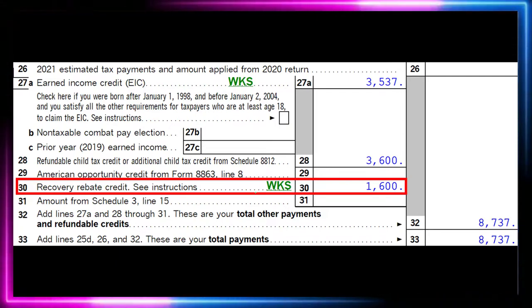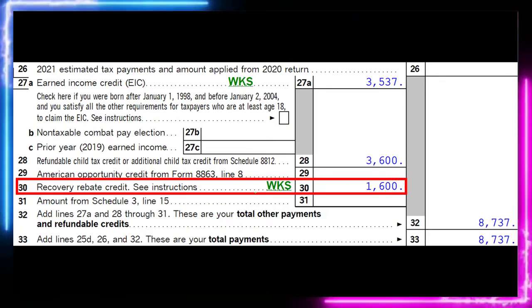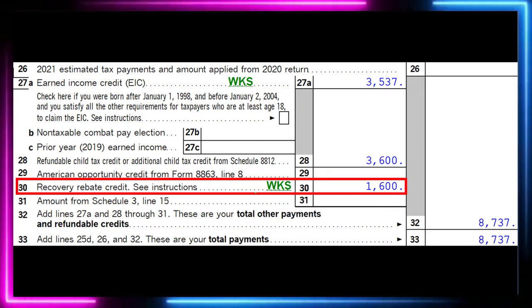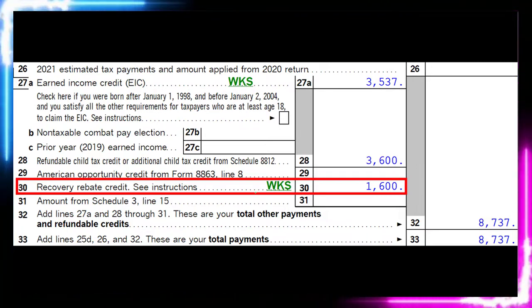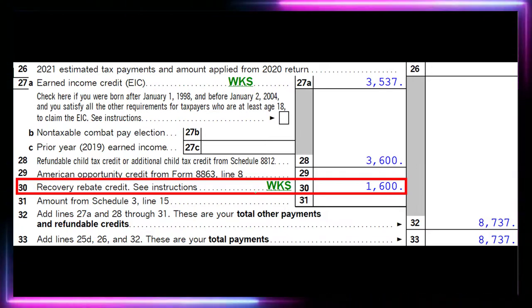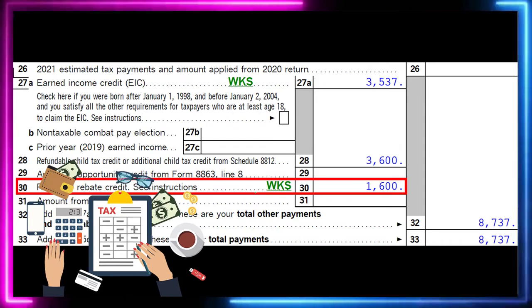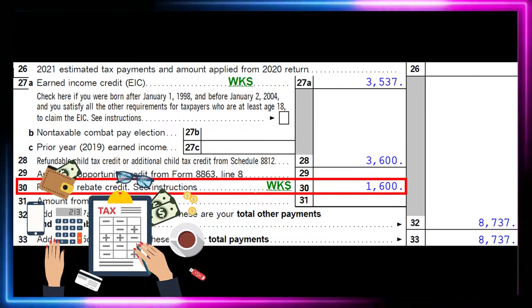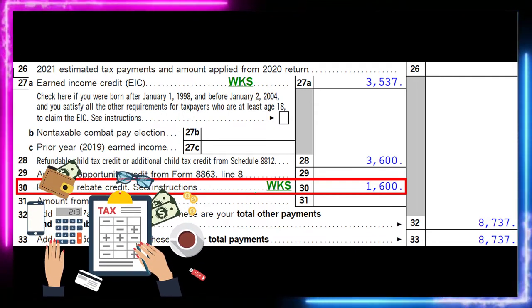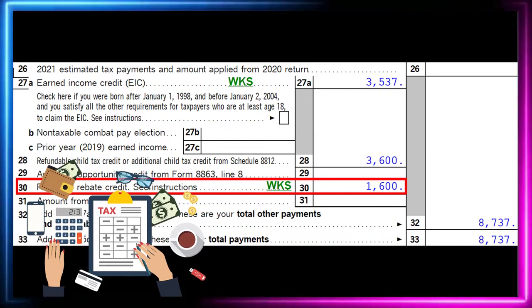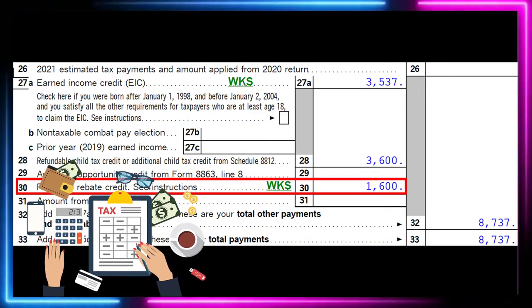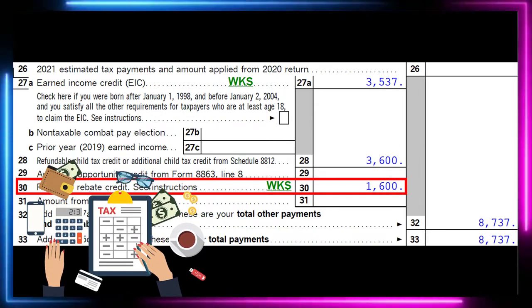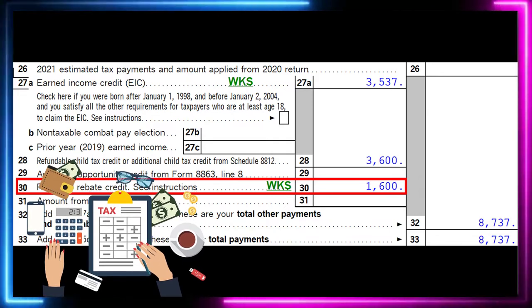The recovery rebate credit is tied to the stimulus payments or the economic impact payments. There are three stimulus payments up to this point. The first two stimulus payments are actually applied to the prior tax return. The third stimulus payment is the one applied here to the 2021 tax return. The stimulus payment is basically a prepayment, in a similar way as the advanced child payments were prepayments to the child tax credit.